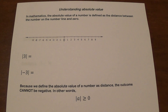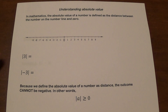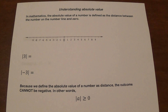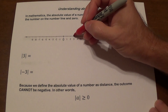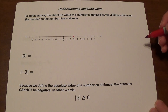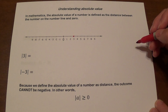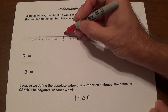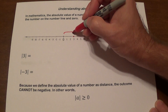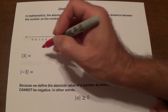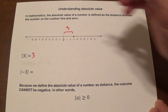If you're trying to find the absolute value of positive 3, think about where positive 3 is on the number line. Positive 3 is located right there. The question is, how many units is it away from 0? If you count them, you can see that this distance is 3. That means the answer is 3.